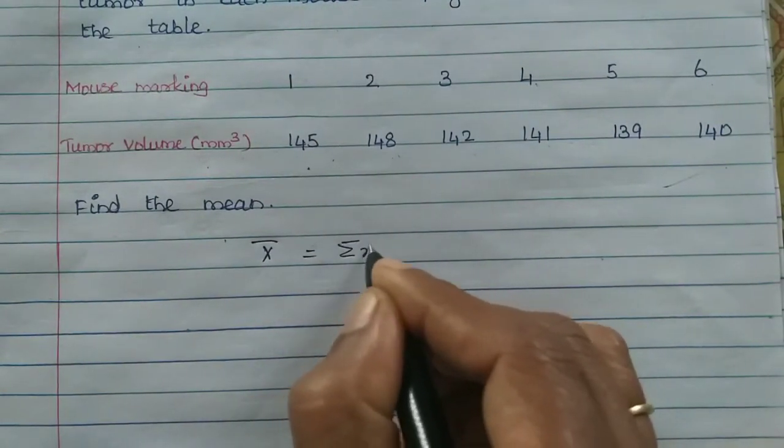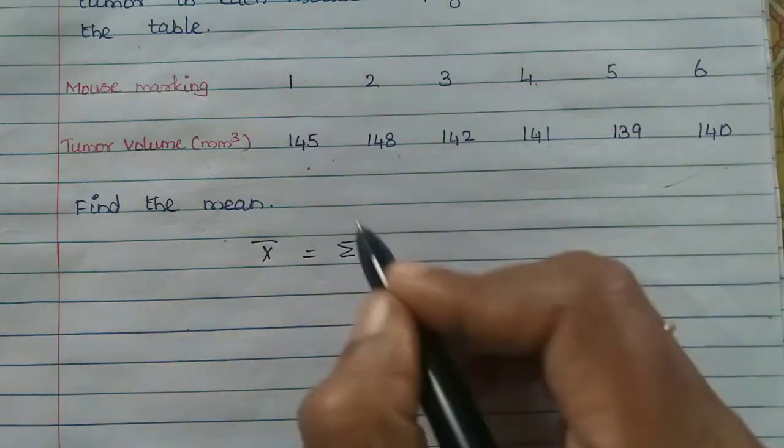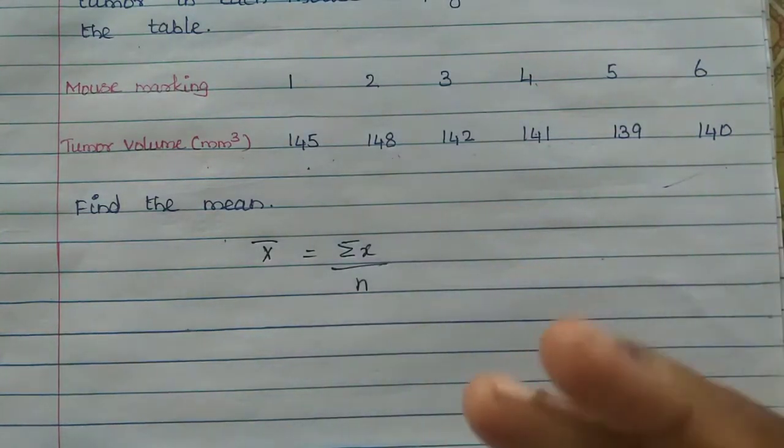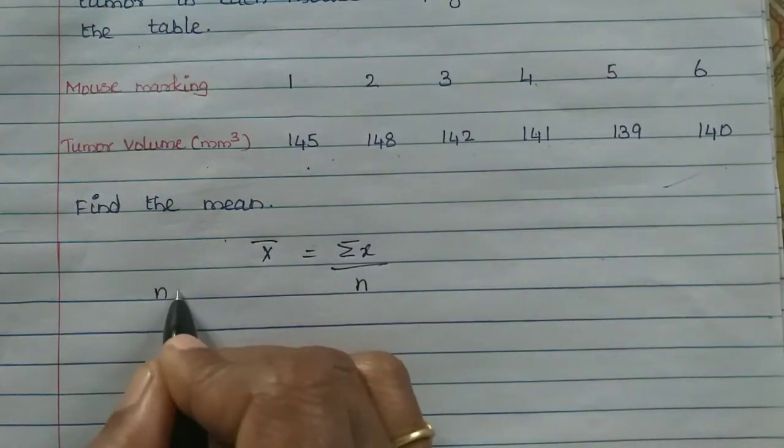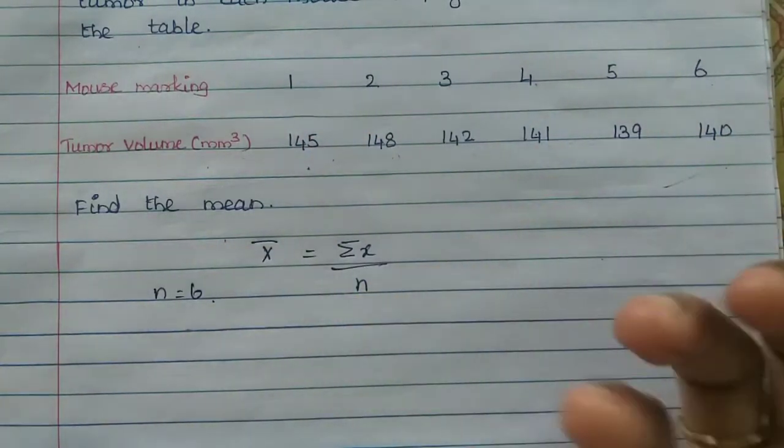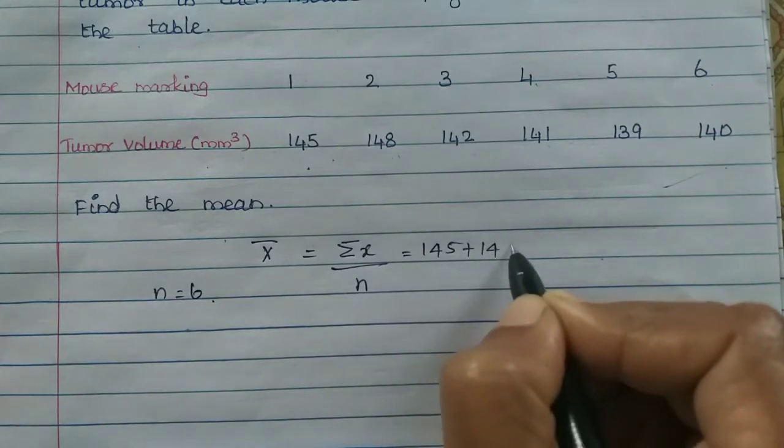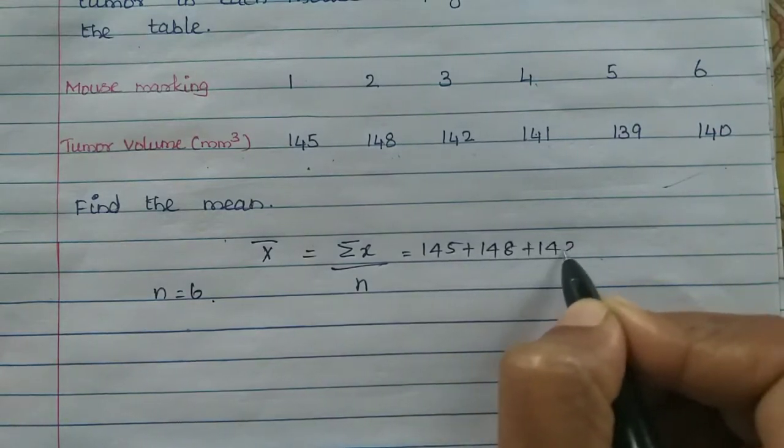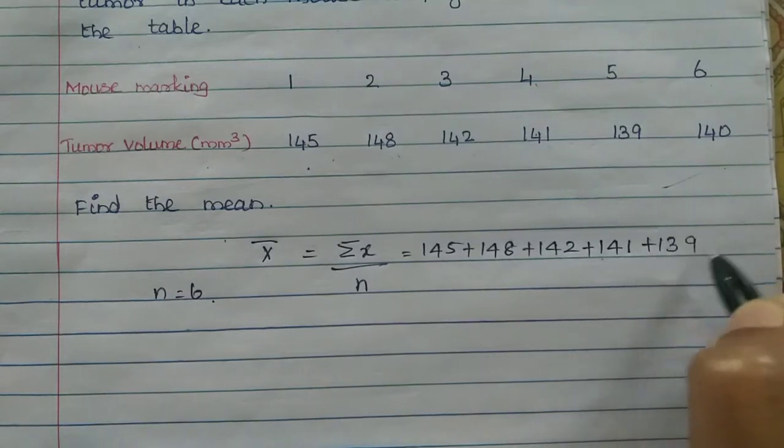Sum of observation is x1, x2, x3, x4, x5, x6. Number of observations - how many times do we have? 6. So n equals 6. Now, the observation is 6. So we have to find the mean. We add 145 plus 148, plus 142, plus 141, plus 139, plus 140.